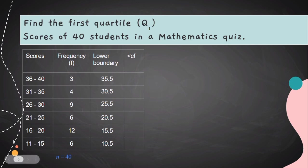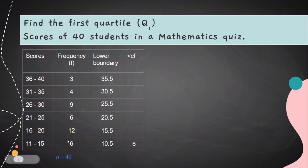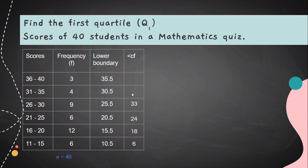To find the cumulative frequency, we start at 11 to 15, where the frequency is 6, so the first cumulative frequency value is 6. To get the next term, add the next frequency to 6, which gives 18. Then 18 plus 6 is 24, 24 plus 9 is 33, 33 plus 4 is 37, and 37 plus 3 equals 40. The last value must equal our total frequency, which is 40.